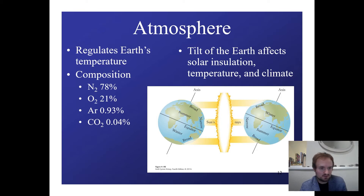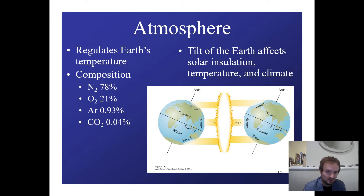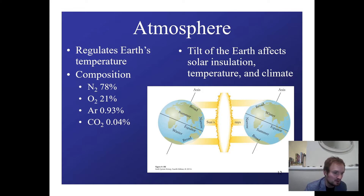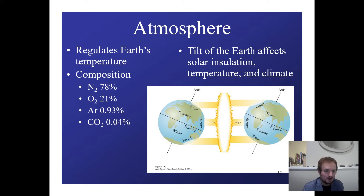We all live under the blanket of the atmosphere, which is mostly composed of nitrogen, oxygen, argon, and CO2 — though CO2 is very low, at about 0.04%, or 400 parts per million. It goes up and down over time, and right now it's just been going up. That's not great for us because CO2 traps a lot of solar radiation and warms us up, which leads to climate change.